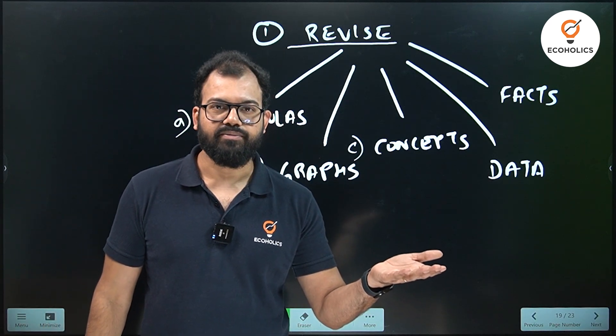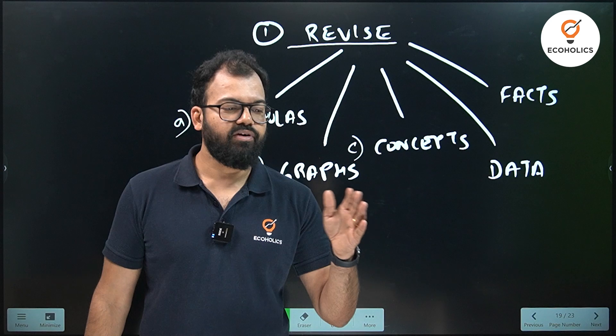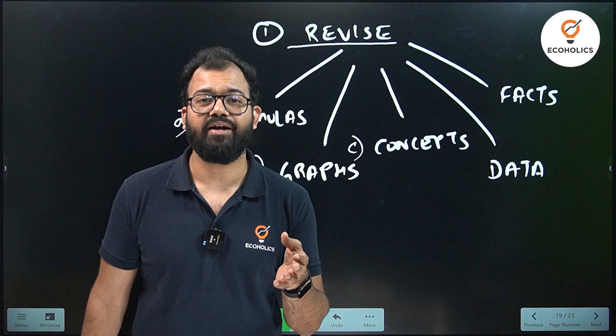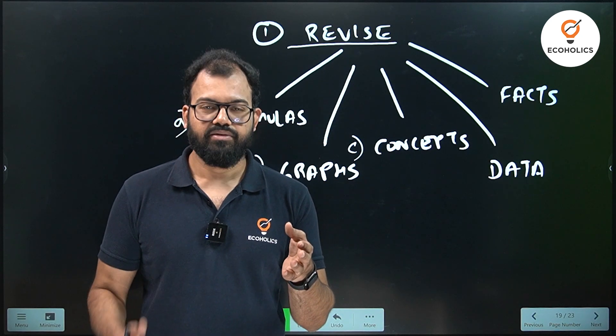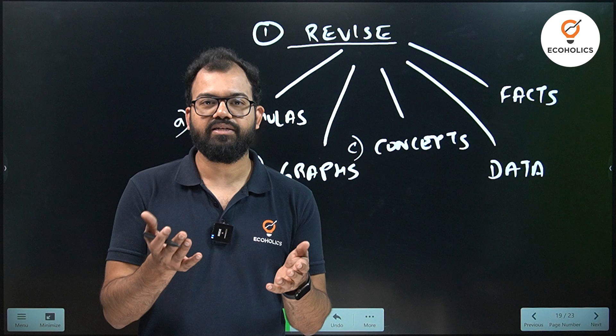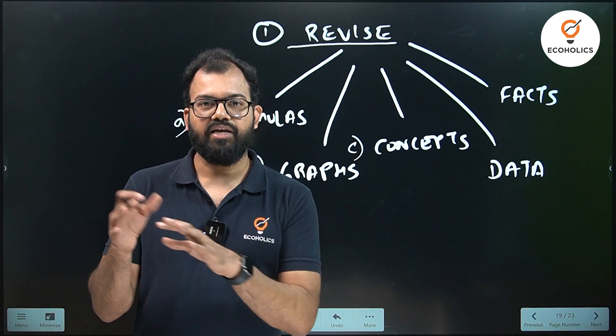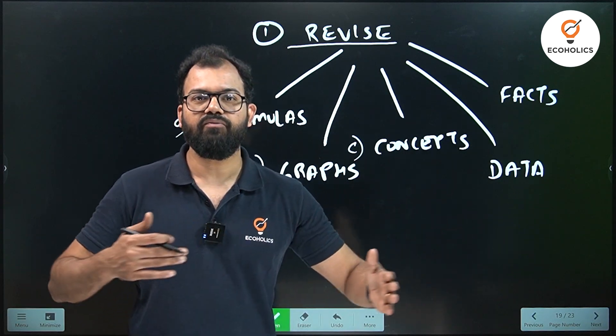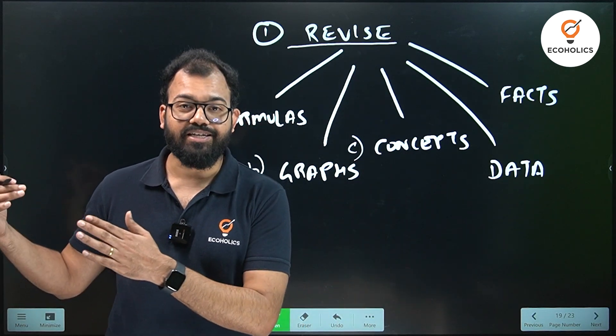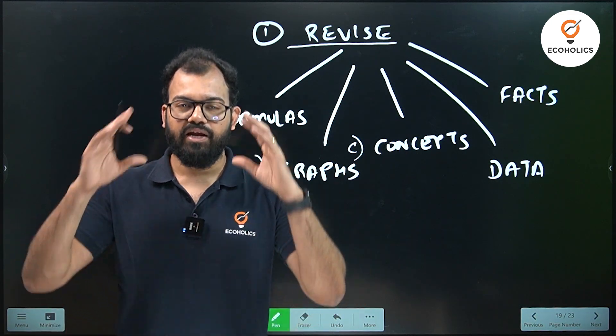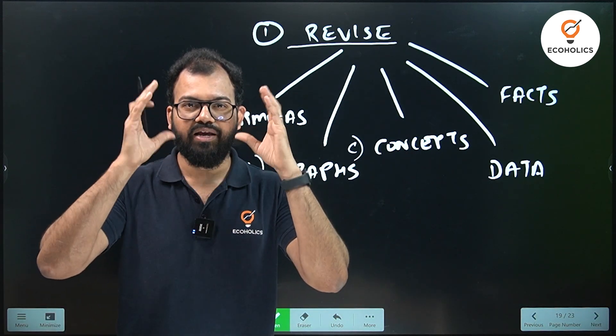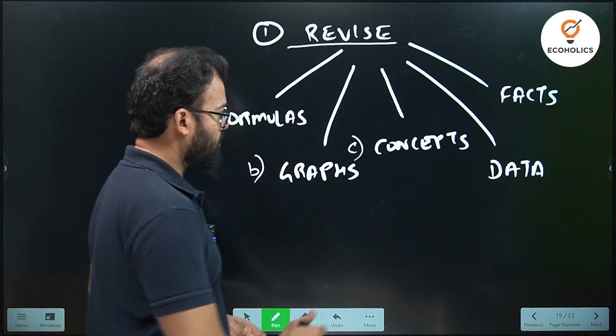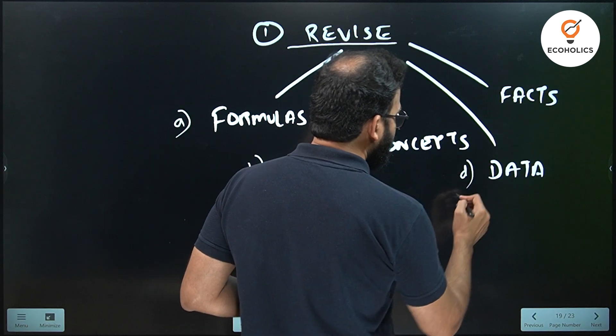Adam Smith came with free market. Then David Ricardo said you will trade, but not based on absolute advantage - you can trade with comparative advantage. Then Haberler came saying it's not just comparative advantage, it's opportunity cost. Then Heckscher-Ohlin said factor endowment. You can understand these concepts developed over the period, over the centuries. If you understand the timeline, it will give you a clear picture so that you attempt this examination with crystal clear concepts. Point D is data.